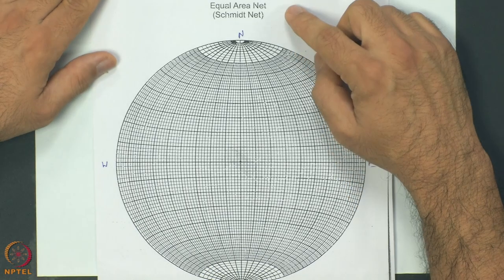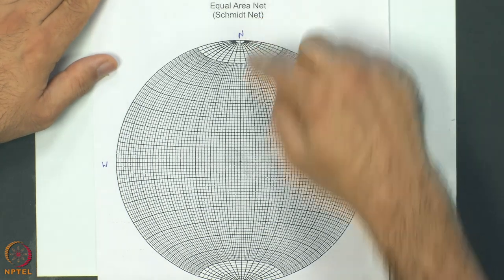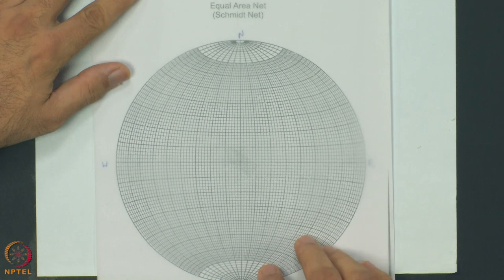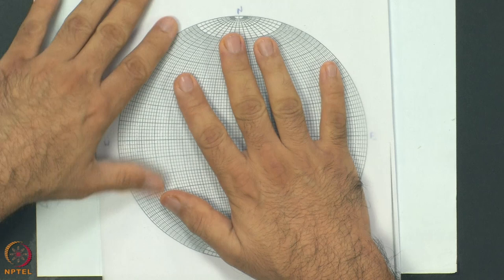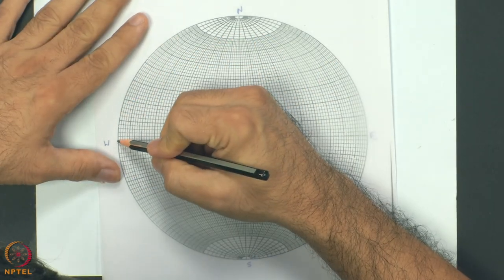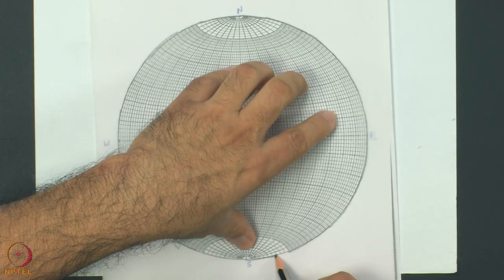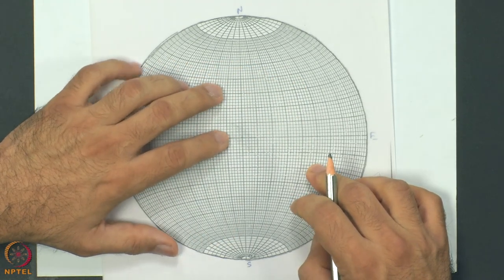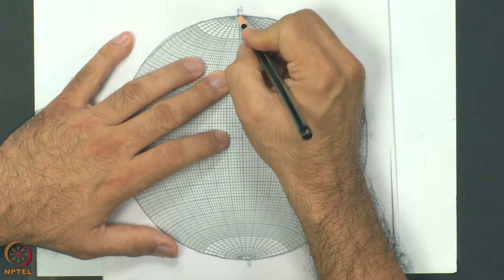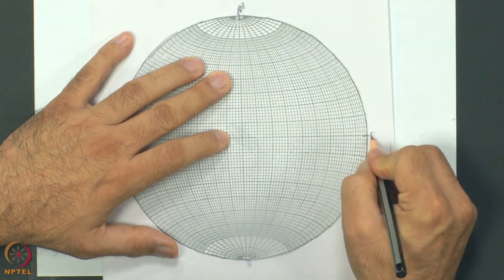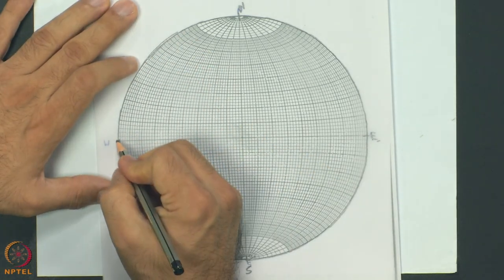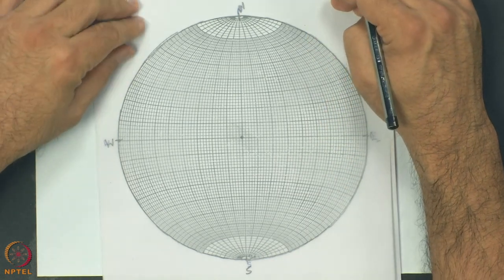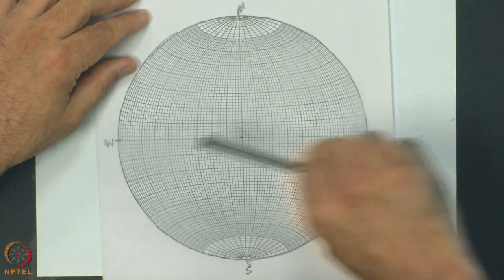I have taken an equal area net, also known as a Schmidt net, where north, south, east and west directions are marked. I am superposing a tracing sheet. My first job is to mark the outer circle with a pencil, then mark the north, south, east, and west directions on the tracing sheet, and mark the centre. Before initiating any stereonet problem, always draw this outer circle, mark the cardinal directions, and mark the centre.